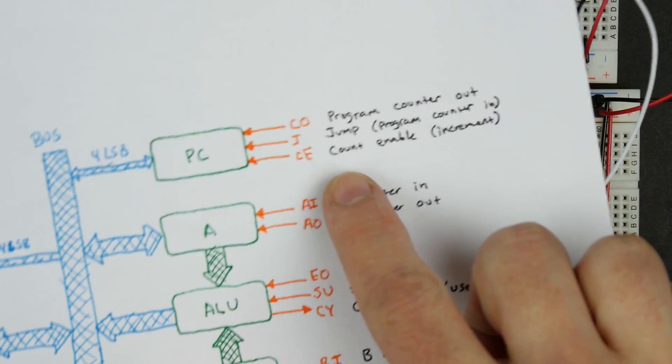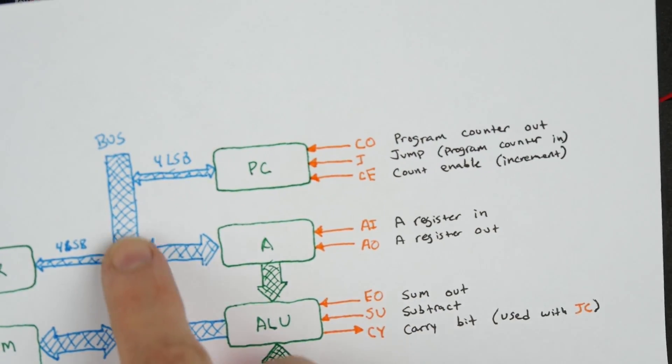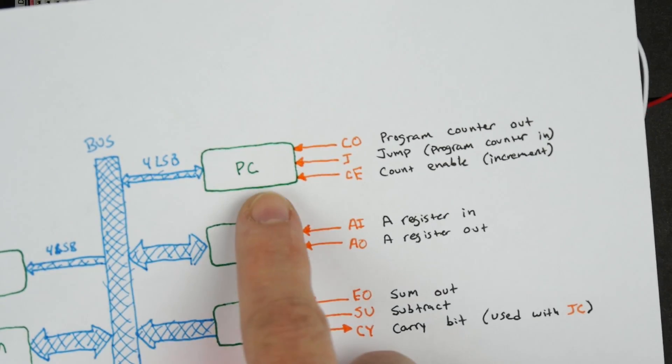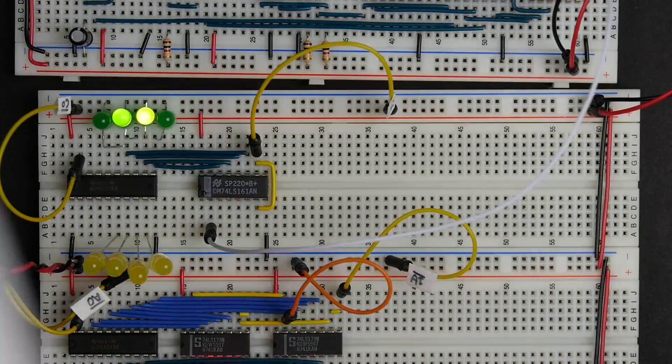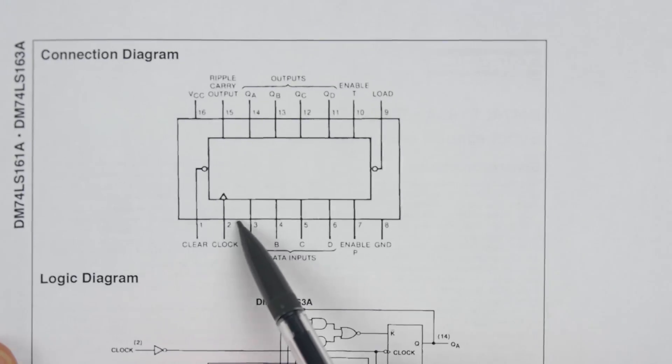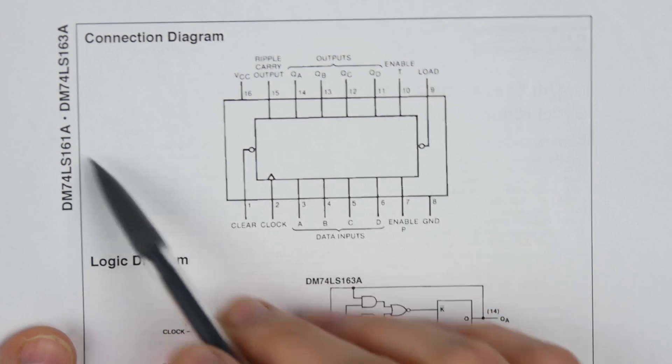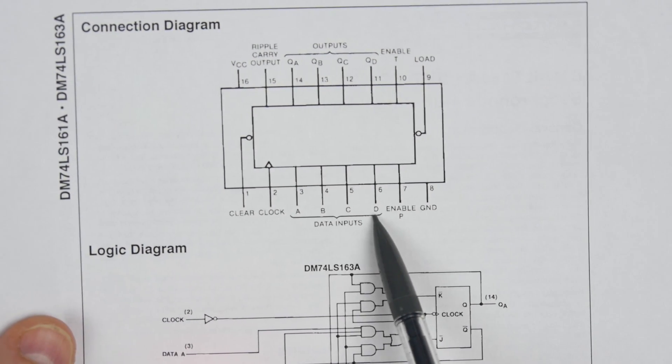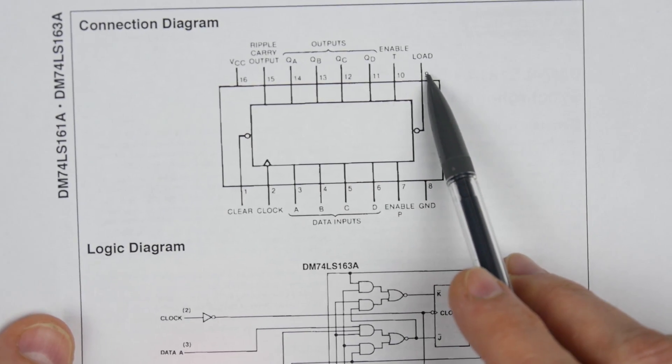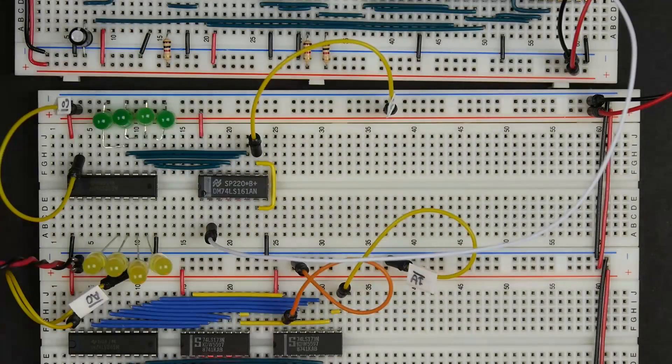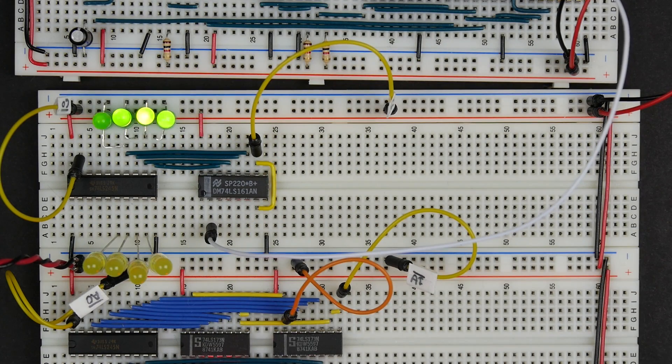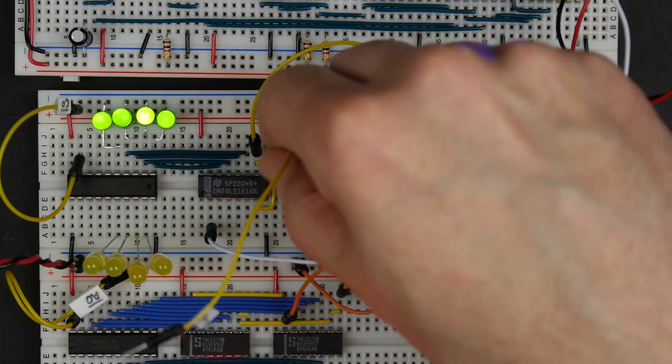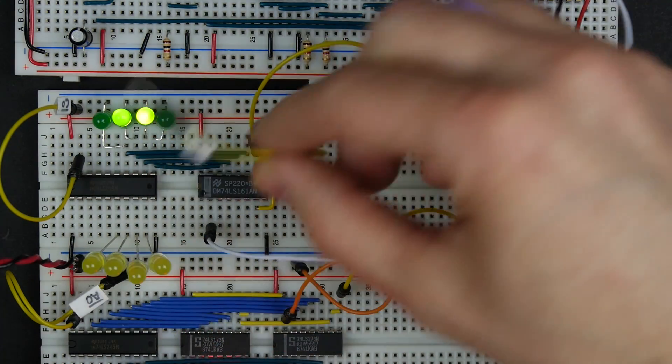The only piece we have left is the jump. The jump basically is a program counter in. It should take the contents of the bus and load it into the program counter. This should be pretty straightforward as well because the 74LS161, one of the reasons we chose to use it, is it has these data inputs. It has this ABCD input and it has a load signal over here. So the load signal is going to be our jump. I can just connect over here. This is that load pin.